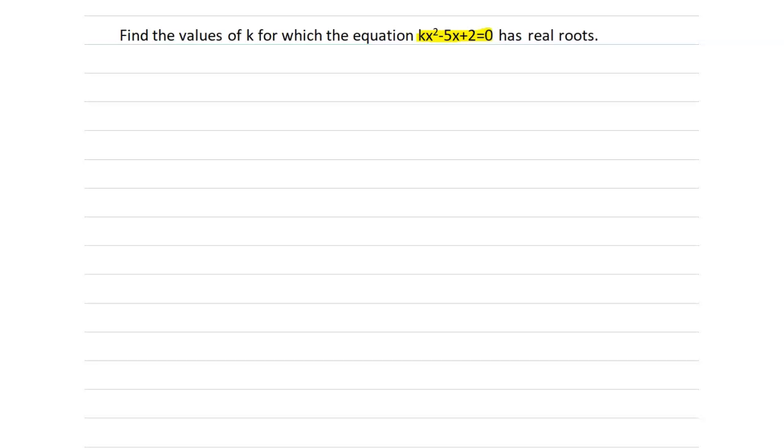Now we are given with the quadratic equation, we have to simplify this equation and the condition given is the equation has real roots. We have to find the values of k. Here we are given with the quadratic equation kx² - 5x + 2 = 0.